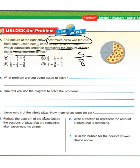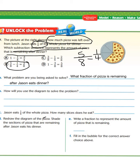He ate 1 fourth of the whole pizza for dinner. In order to answer this, we would need to find our common denominator — and we already see the equation 5 eighths minus 1 fourth. What problem are we being asked to solve? Which subtraction sentence represents the amount of pizza remaining after dinner — or what fraction of the pizza is remaining after Jason eats dinner?